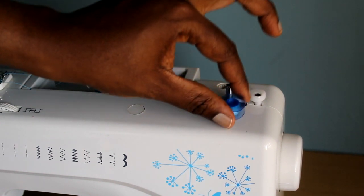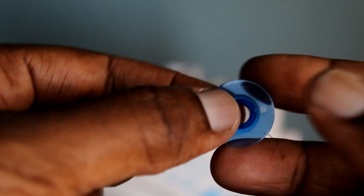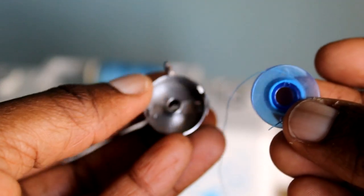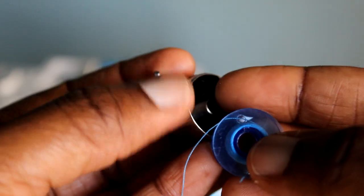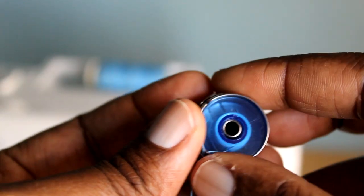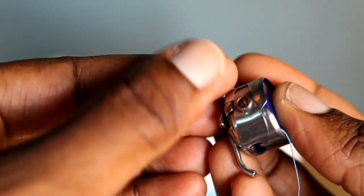Now I'm going to put the bobbin back in its case. What you do is make sure the thread is coming down the left side like a letter P does. Remember P for perfect. You just throw it in there, just push it in. It doesn't click or anything, just push it in.